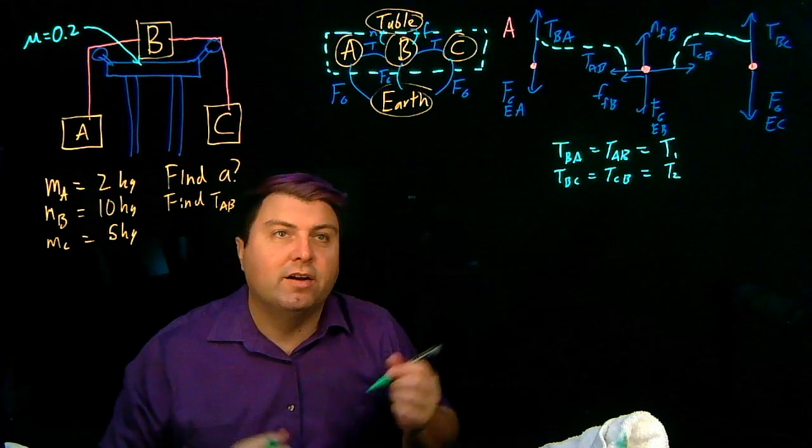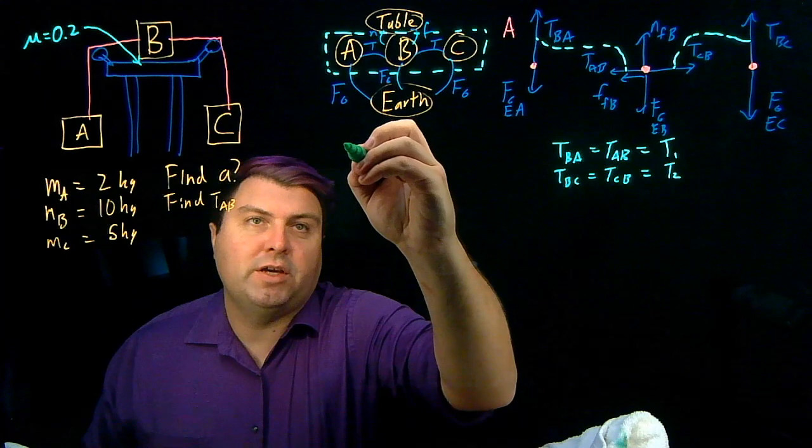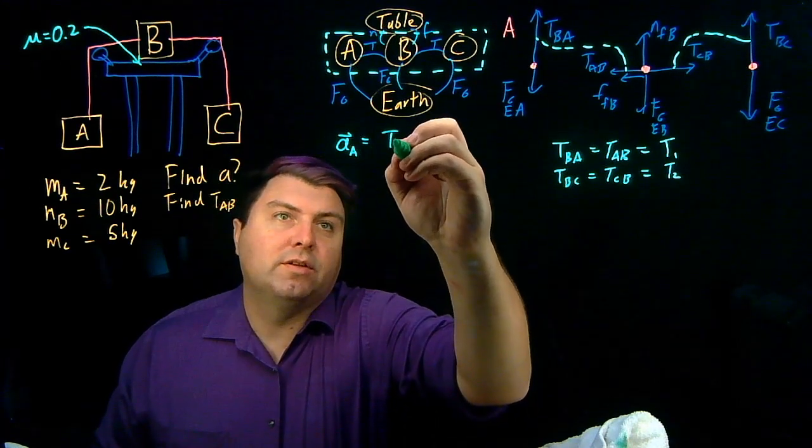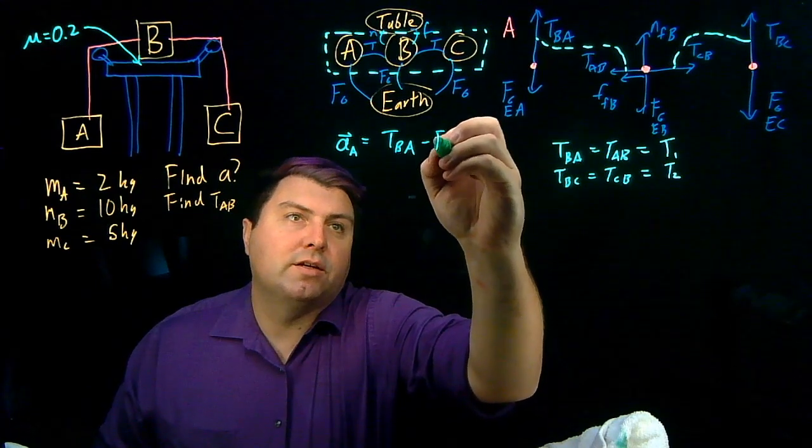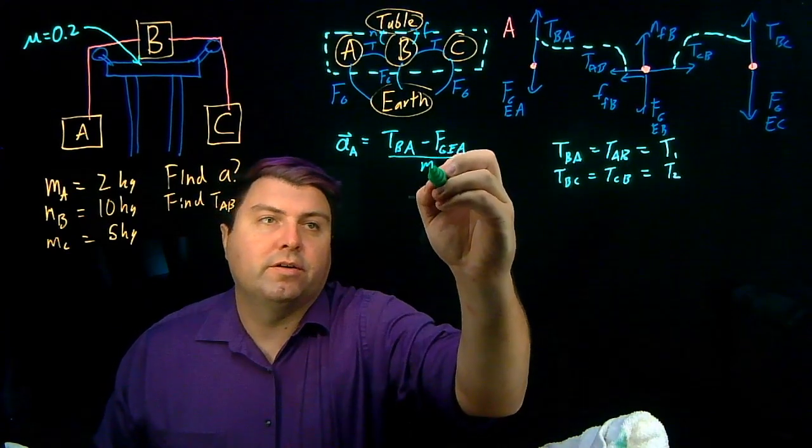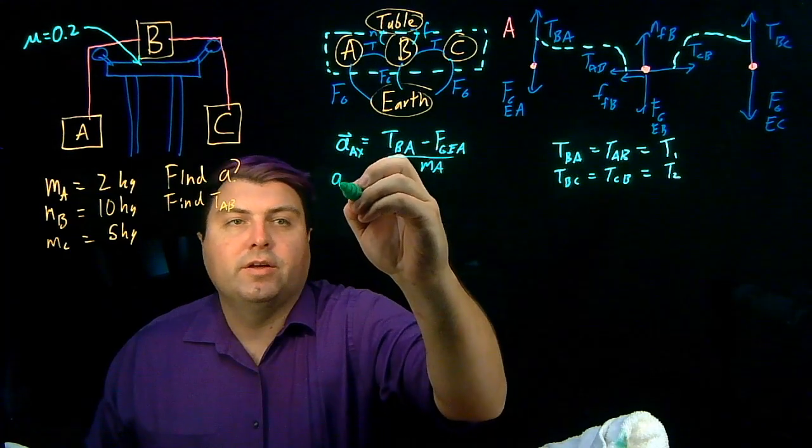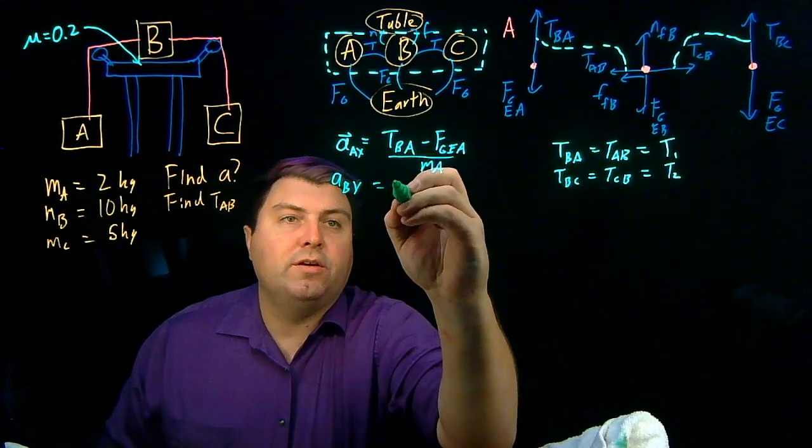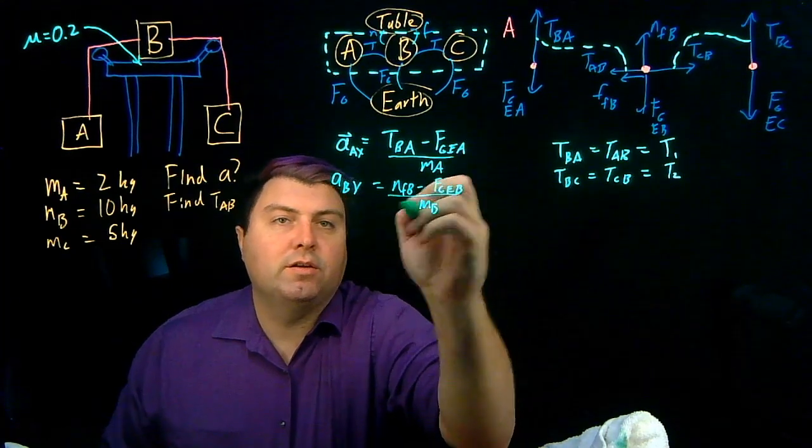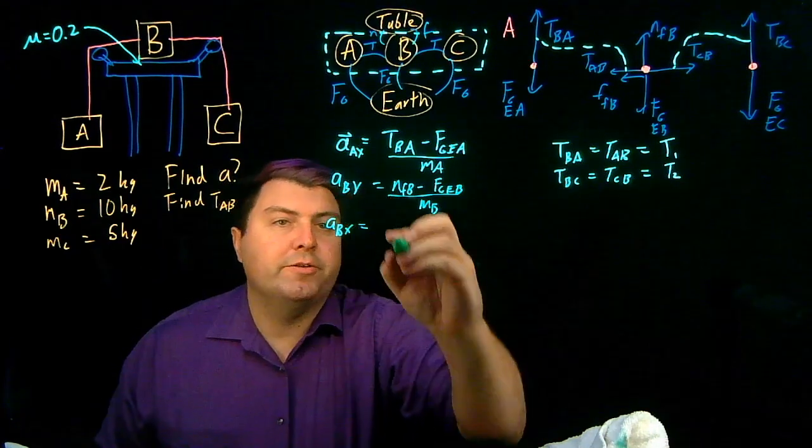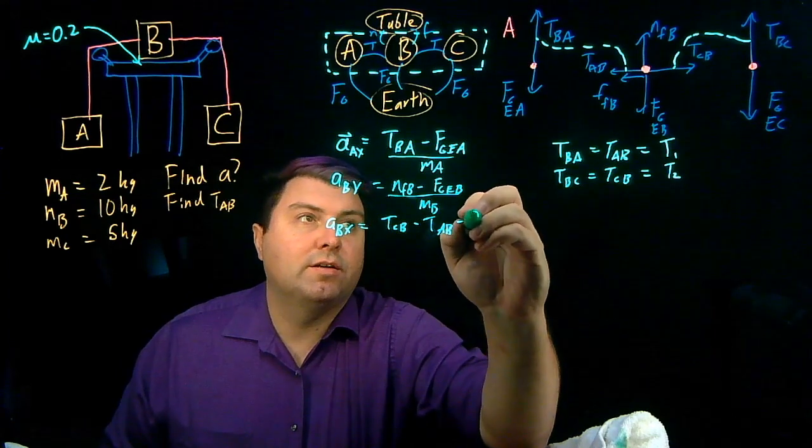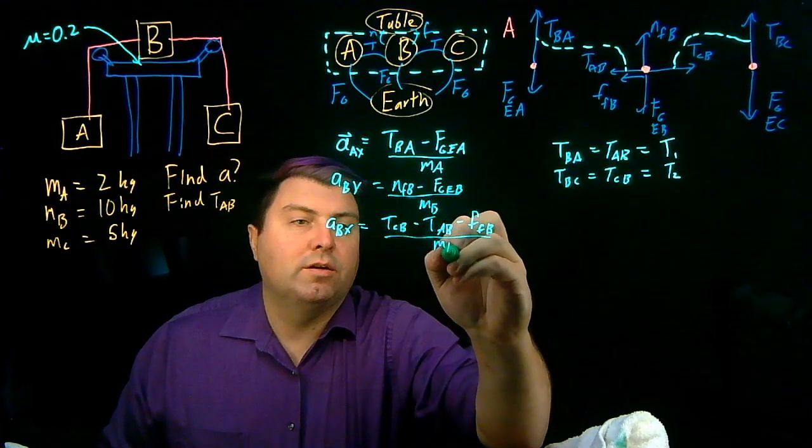And then what we can do is we can start writing our Newton's second law. So our Newton's second law is going to be that the acceleration of A is going to be TBA minus FG EA, and that's over the mass of A, and this will be in the y direction. ABY is going to be normal FB minus FG EB over the mass of B.